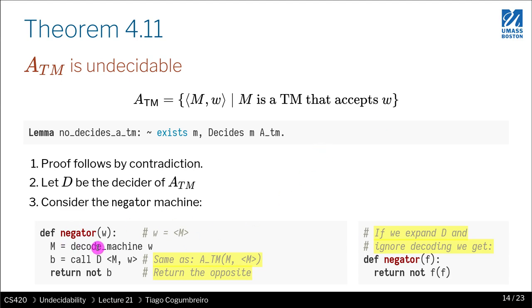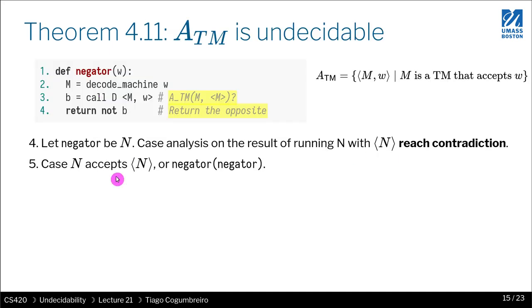Okay, so now we know what the negator is. The negator simply, given an f, returns whether f rejects its code. So how do we prove that ATM is undecidable? So the proof is as follows. Let's just call the negator to be N, just for simplicity.